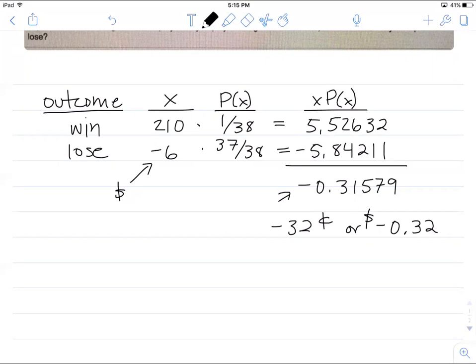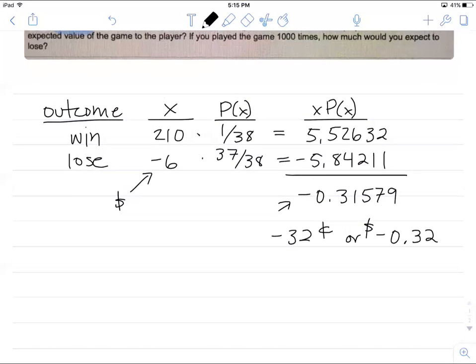Now let's take a look at the second question. What happens if you play the game a thousand times, how much would you expect to lose? So what I'm going to do is take my expected value to five decimal places and I'm going to multiply that by a thousand.